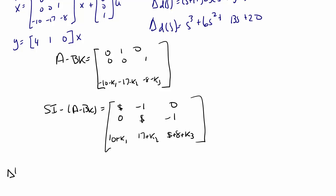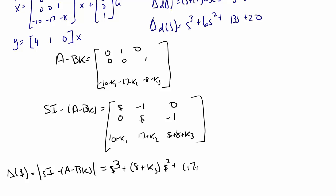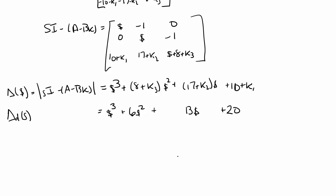We find the characteristic equation as the determinant of sI minus (A minus BK), which equals S³ + (8 + k3)S² + (17 + k2)S + (10 + k1). Equating coefficients to the desired characteristic equation, we get k1 = 10, k2 = -4, and k3 = -2. So K = [10, -4, -2].